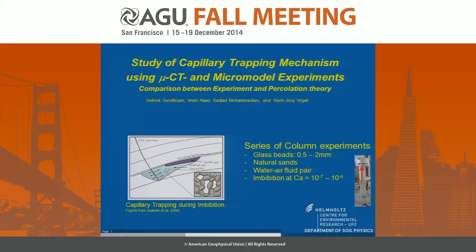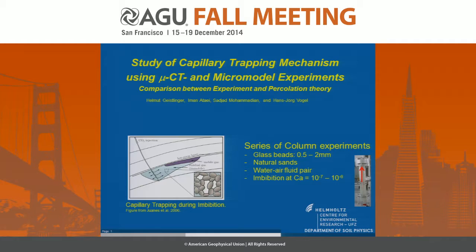We did a series of column experiments using glass beads of different sizes and natural sands, using air-water as the fluid pair. We have a strongly water-wet system, and the imbibition injection rate from the bottom was in a range of capillary numbers 10⁻⁷ to 10⁻⁶.